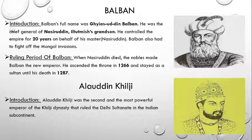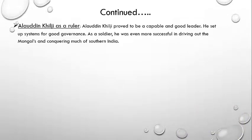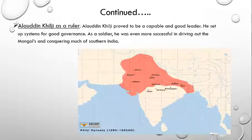Alauddin Khilji was the second and most powerful emperor of the Khilji dynasty that ruled the Delhi Sultanate in the Indian subcontinent. Alauddin Khilji proved to be a capable and good leader. He set up systems for good governance. As a soldier, he was even more successful in driving out the Mongols and conquering much of southern India. During his time period, the Mongols again tried to invade India, but Alauddin and his army successfully fought the Mongols and had a victory over them. He also conquered much of southern India, along with northern India that was already part of the Delhi Sultanate. Here is a map of the Khilji dynasty — these areas might be familiar to you as they all belonged to the Delhi Sultanate.